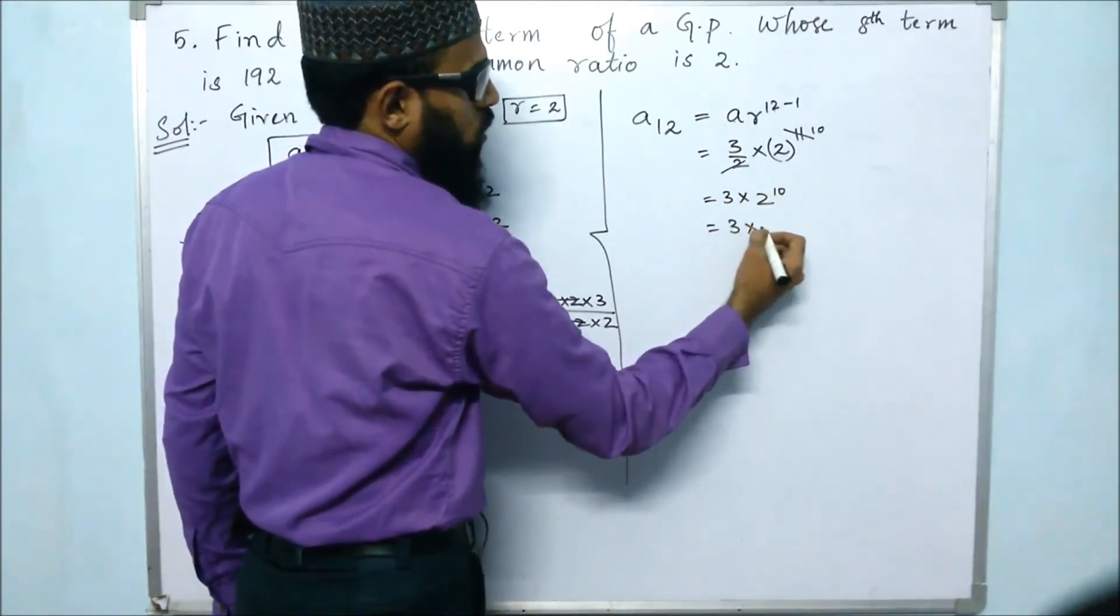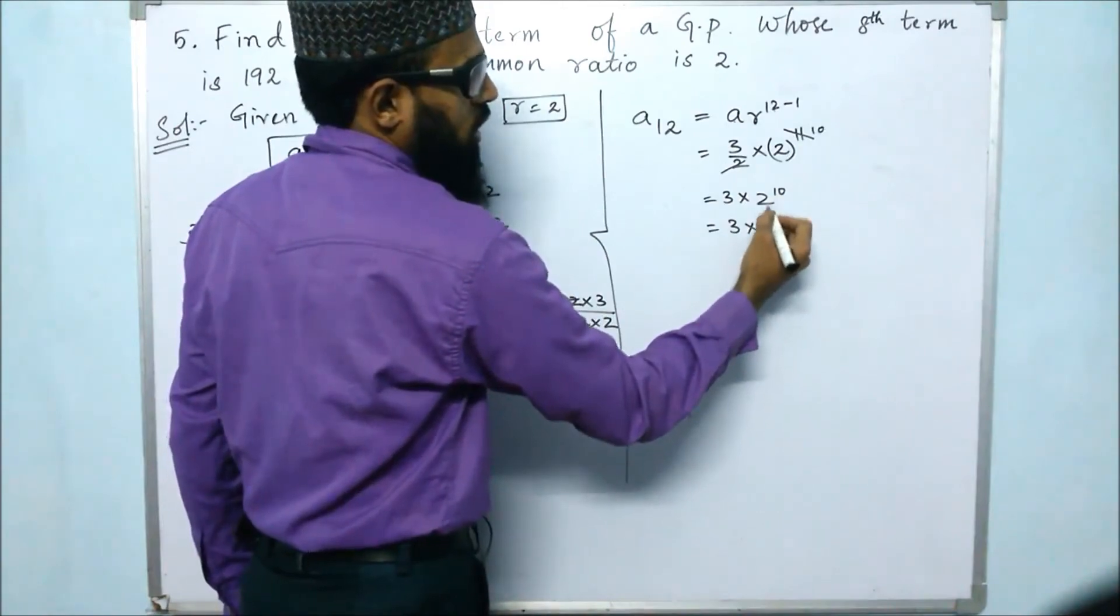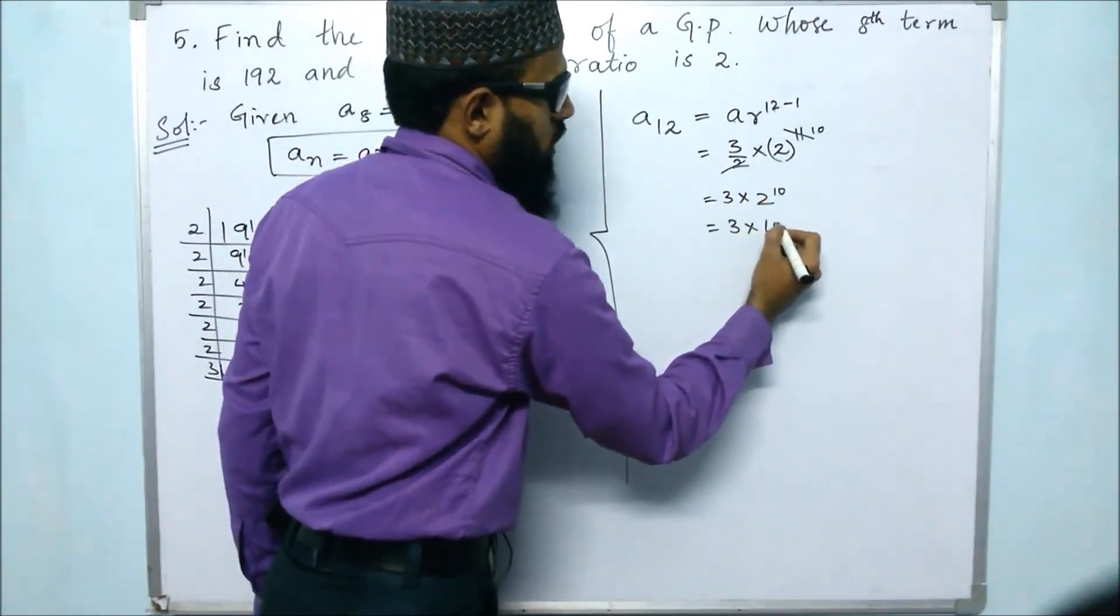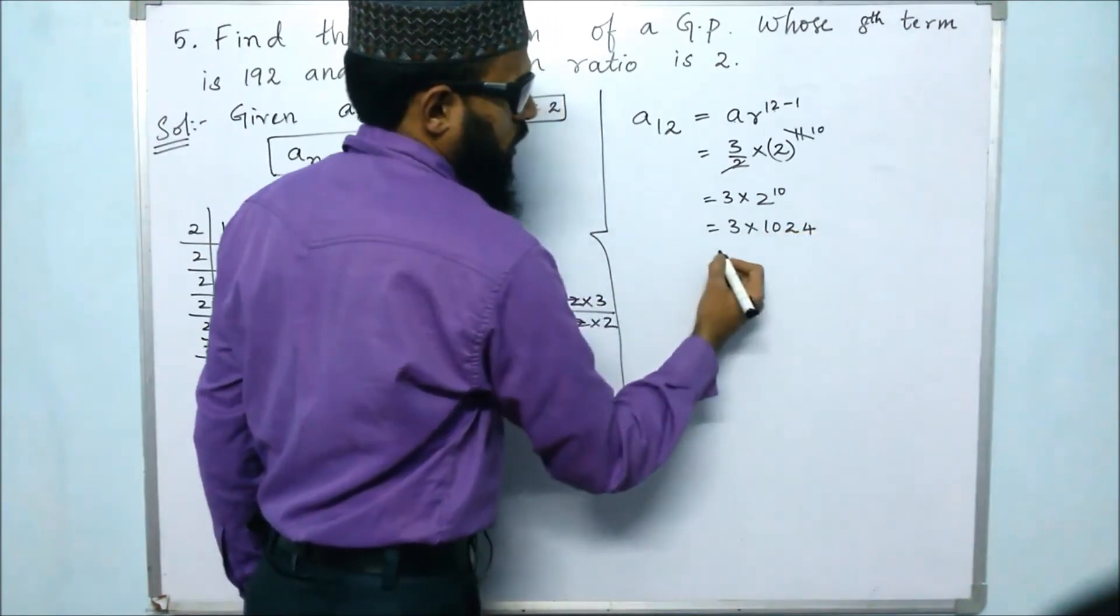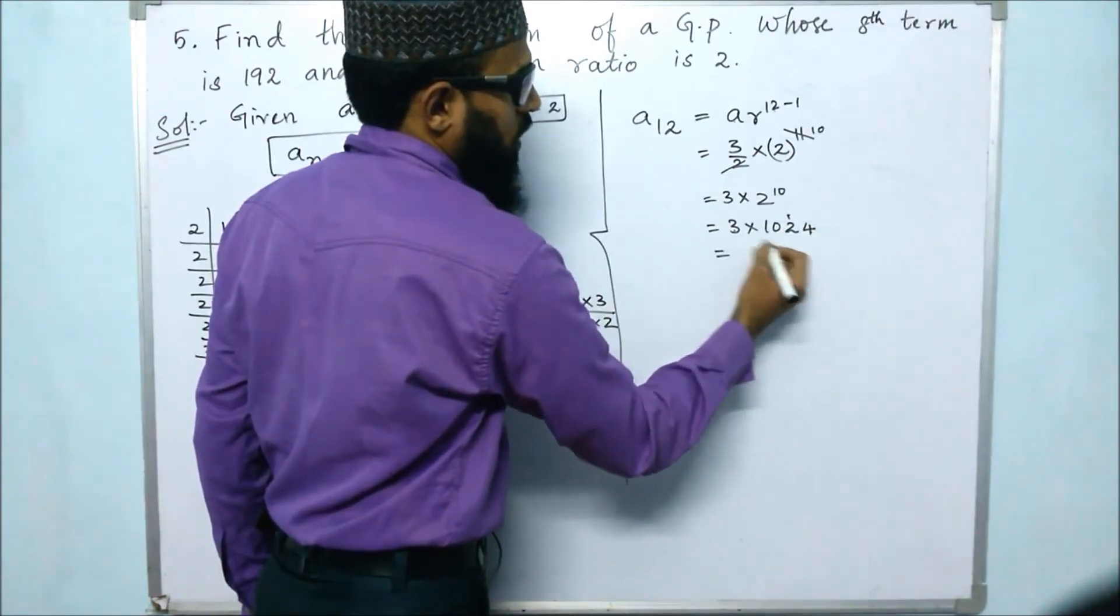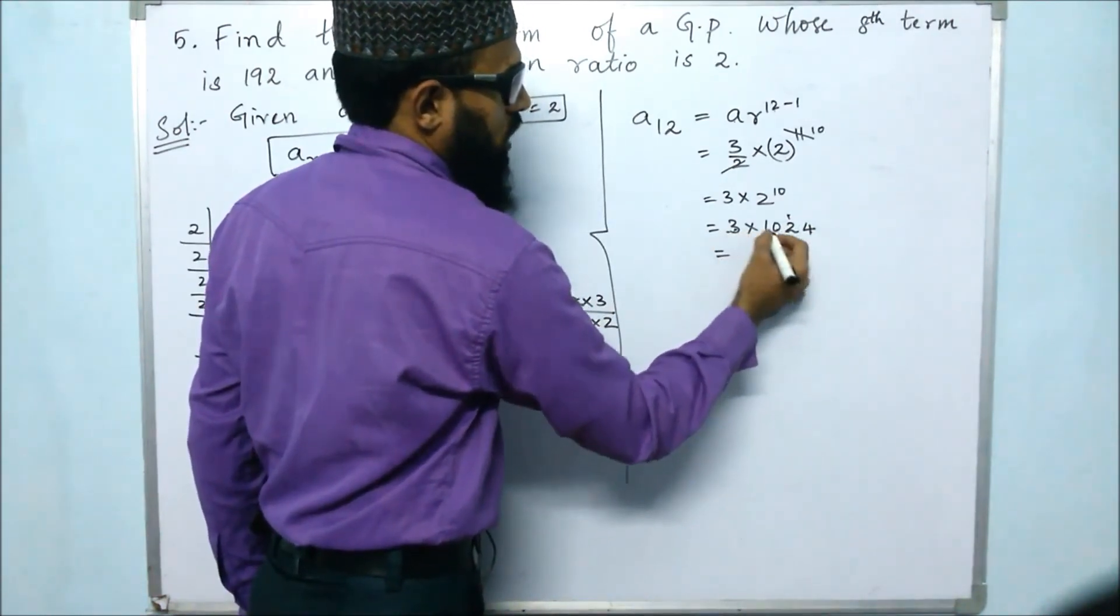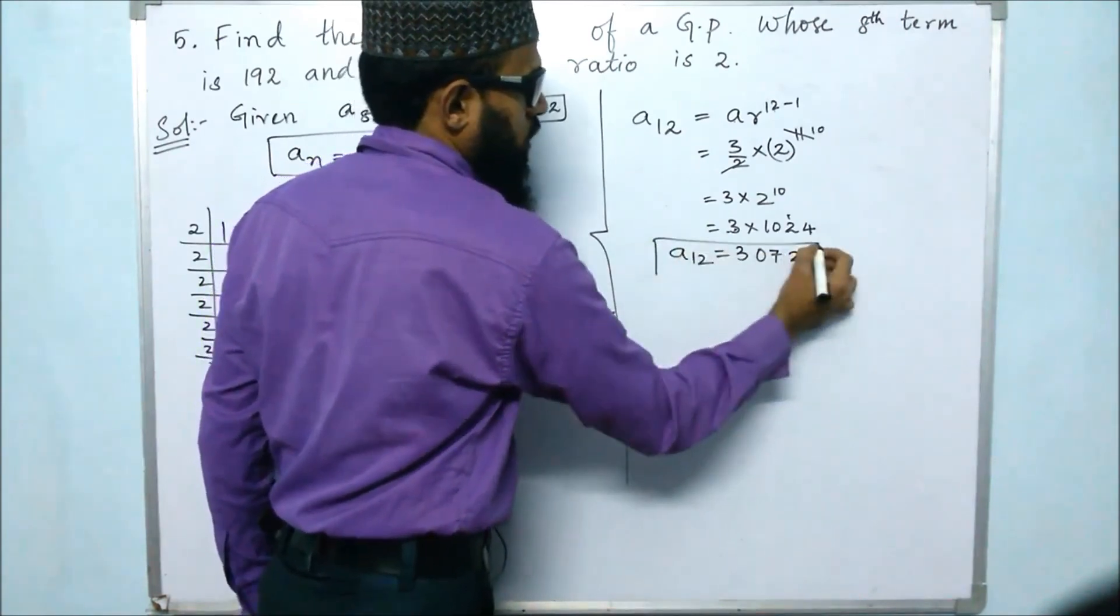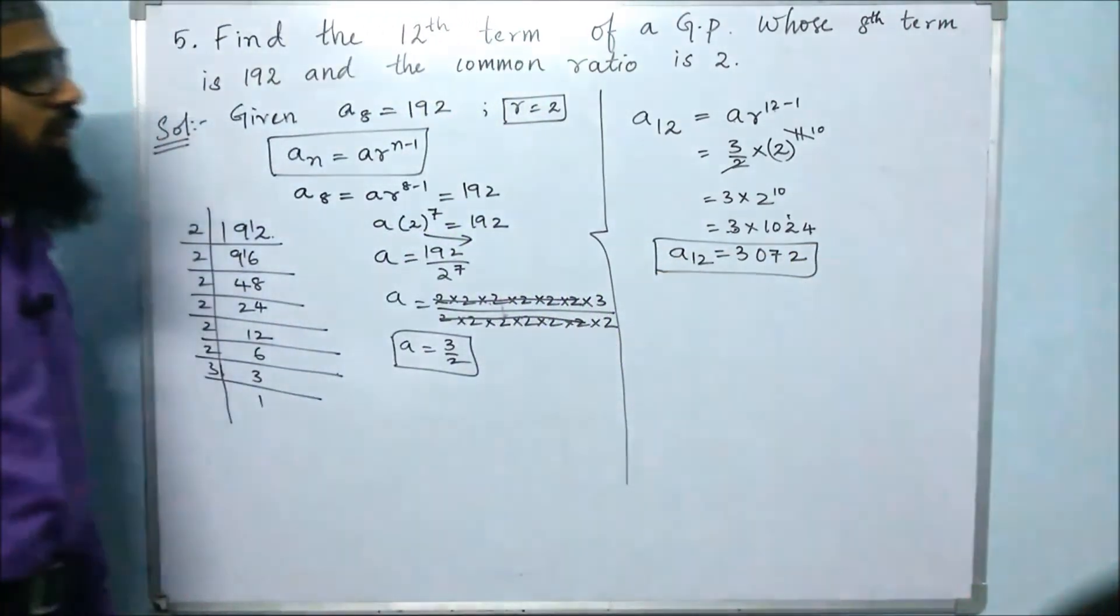So 3 times 2 to the power of 10. If we multiply 2 ten times, we will get 1024. Then 3 times 1024: 3 times 4 is 12 carry 1, 3 times 2 is 6 plus 1 is 7, 3 times 0 is 0, 3 times 1 is 3. So 12th term is 3072.